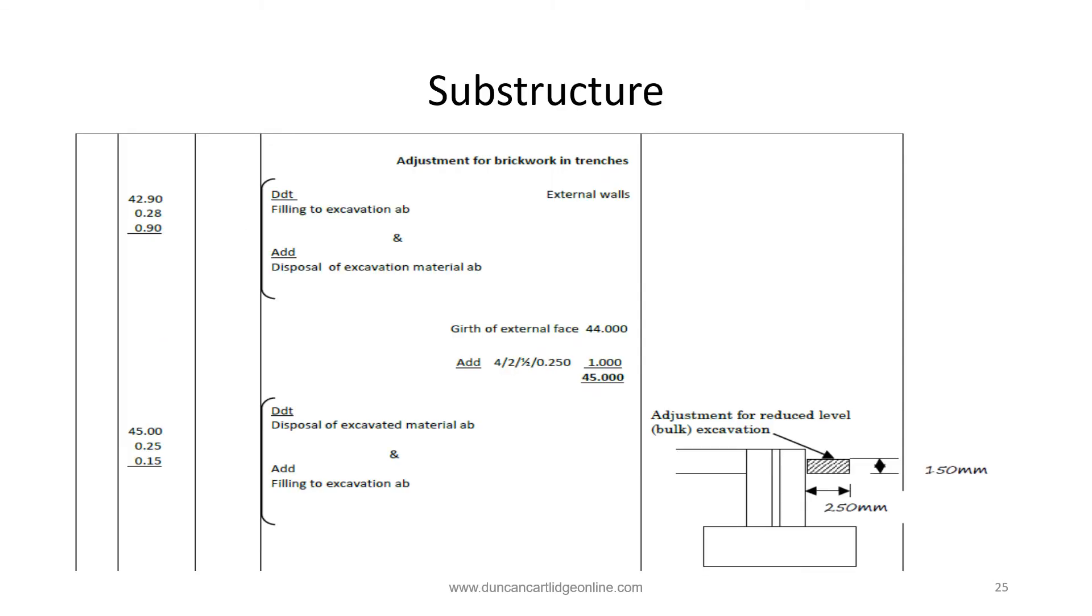We must now make some adjustments to the backfill and removal of spoil. The first item is an adjustment for the masonry in the trench to the filling measured on page 15. In addition, a strip of reduced level excavation measured on page 14 must be reinstated. To do this, the centre line of the strip has to be calculated as shown here. Starting with the girth of the external face 44 meters, add 4 times, twice times, half times, 250 millimeters to arrive at the mean girth.